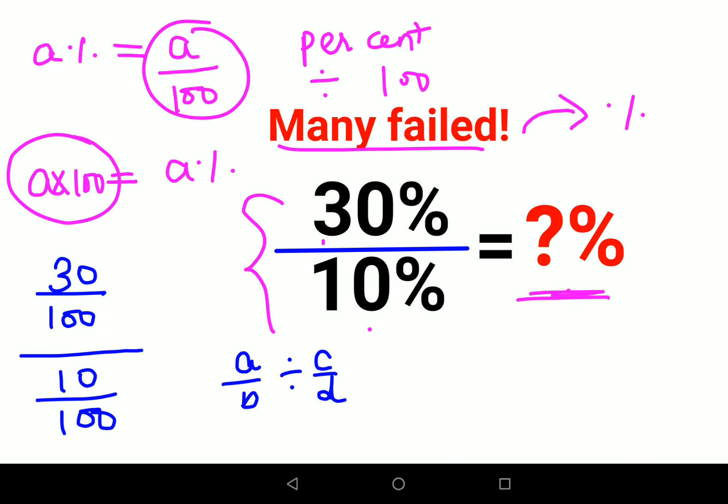Please remember, whenever you have a fraction divided by a fraction, you follow the rule of KCF. This is nothing but 30 upon 100 divided by 10 upon 100.